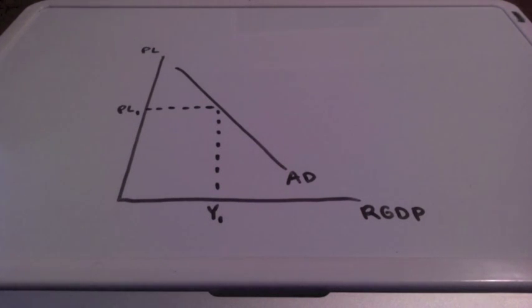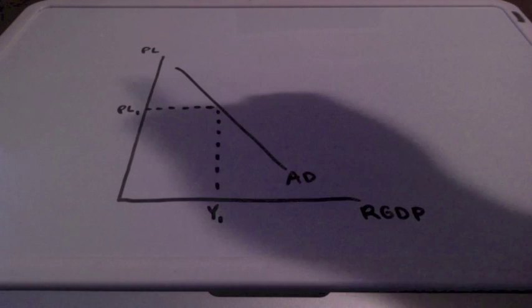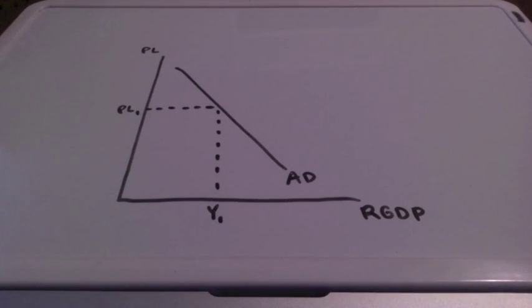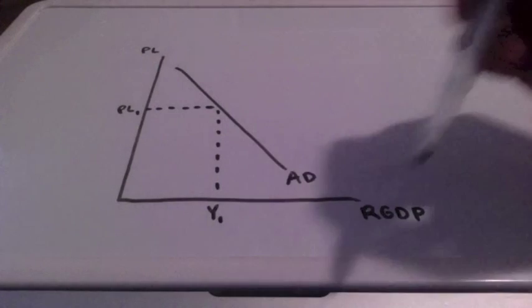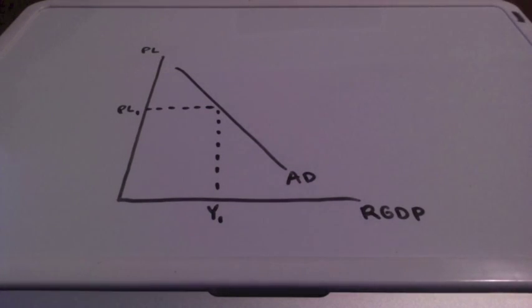In this video lesson we're going to discuss aggregate demand. We have PL representing price level for the vertical axis and we have RGDP representing real GDP for the horizontal axis and we have a downward sloping aggregate demand curve.